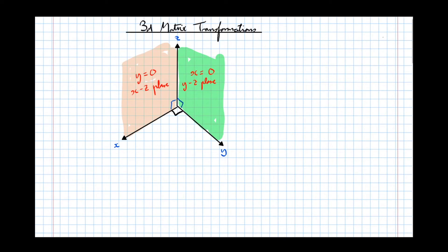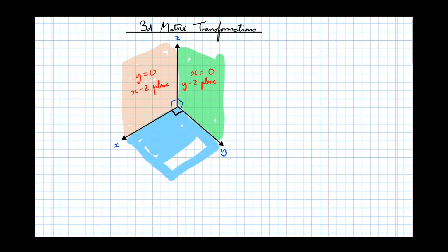Finally, Z equals 0 — trace the Z axis back down to the origin. Moving in either the X or Y direction won't change the Z coordinate. Therefore the third plane, Z equals 0, is this one here, shaded in blue. That's the plane Z equals 0, also called the XY plane.